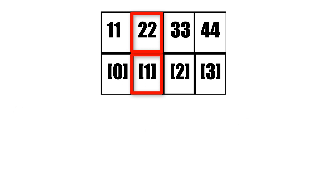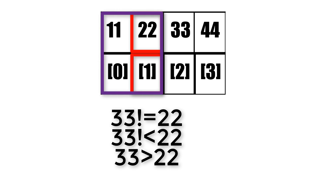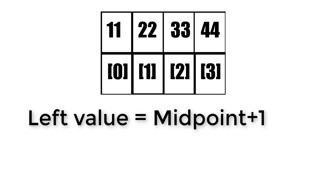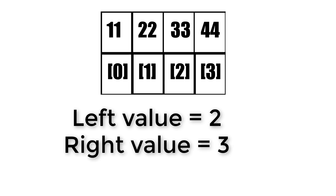Now we're going to compare 33 to 22. 33 isn't equal to 22, and 33 isn't smaller than 22 — but 33 is greater than 22. By that logic anything below 22 is useless because we know 33 can't exist there. So anything from index 1 or below is useless to us. Our new leftmost value shall be equal to the midpoint plus 1, so in this case it's 1 plus 1 which equals 2. The rightmost value won't change because the maths we just determined does not affect it.